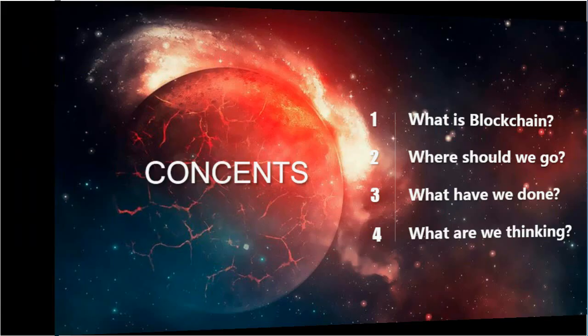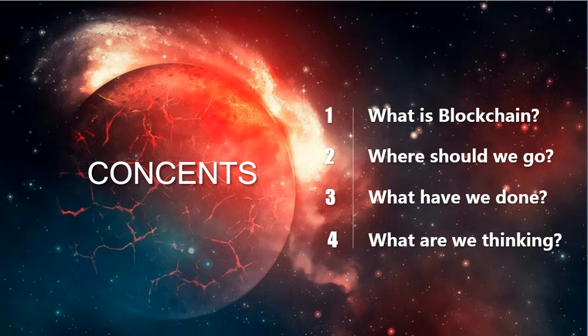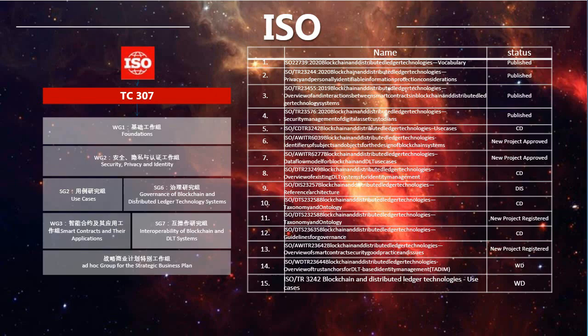Now let's move to the third part: what have we done? ISO started TC307 at the end of 2016. The proposal was made by Standards Australia, which acts as secretary to promote TC307 standardization. The main work of ISO TC307 is to develop international standards in the blockchain industry. As of May 2021, TC307 has set up five working groups, one study group, and one joint working group, with 11 standards under development and four standards published.